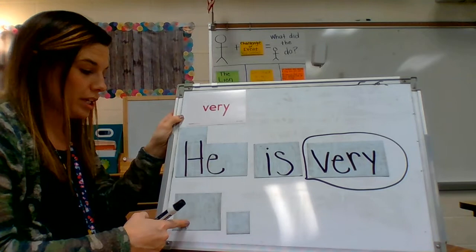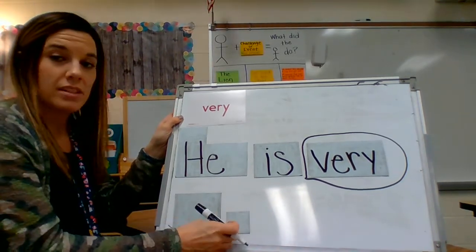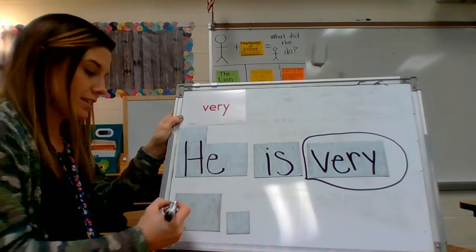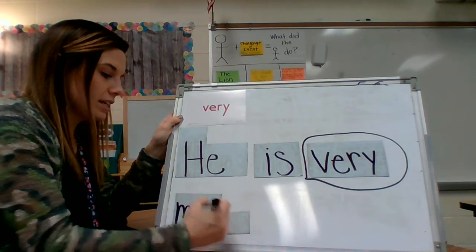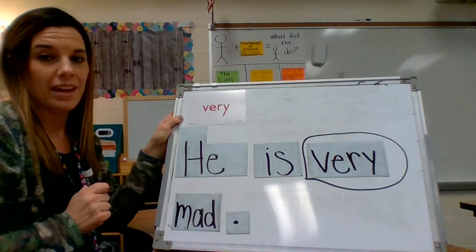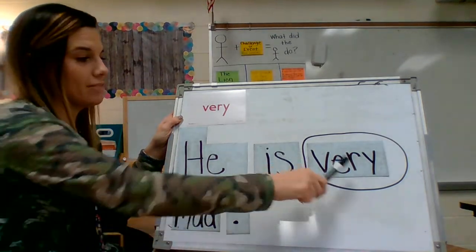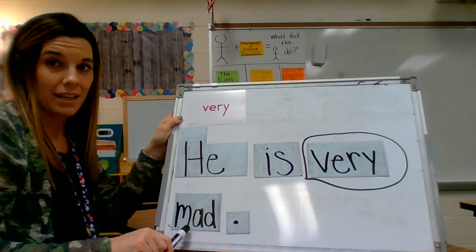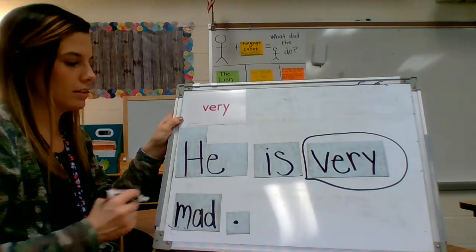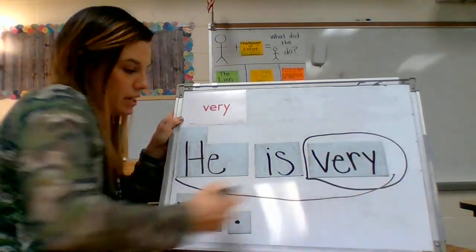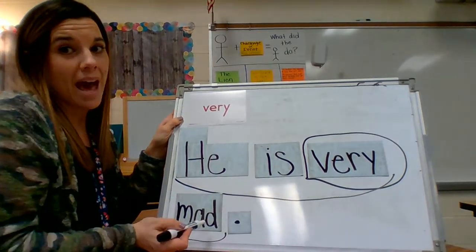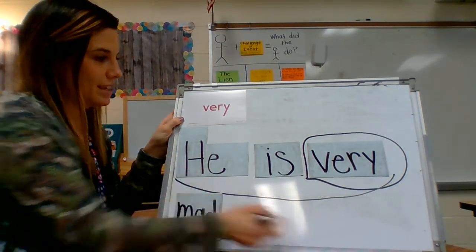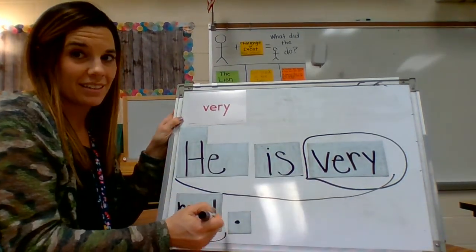Mad. We are going to write the word mad. I'm going to write the sounds, the letters as I say the sounds. M-A-D. Okay. Let's read it. He is very mad. Let's put our fluency sweeps in. He is very mad. He is very mad. Mad. Can you read it with me? He is very mad. Good job.